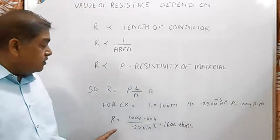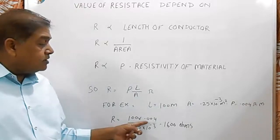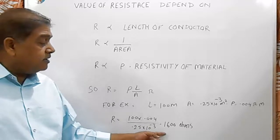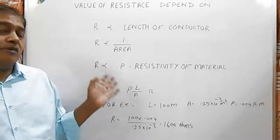By putting the values, R = (100 × 0.004) / (0.25 × 10^-3) = 1600 ohms. With this formula, we can find the resistance of any conductor.